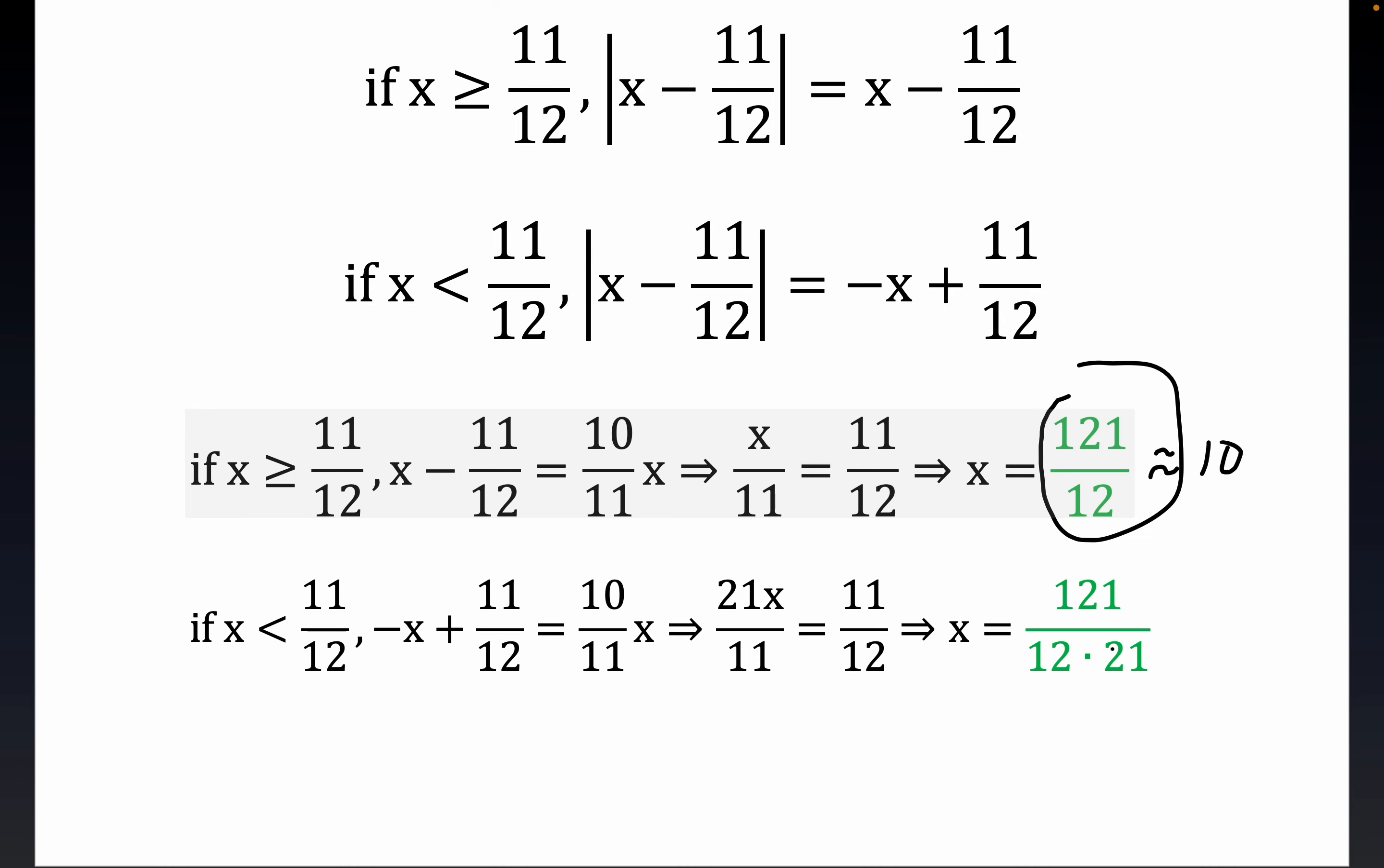Now, right here, what is this? This is 121 over 21 times 12. 21 times 12 is 20 times 12 plus 12, but that's 240 plus 12 is 252. So we get 121 over 252, and that's not too far from one half. We'll put lazy equal sign here, one half. It's smaller, but it's somewhere close to there.